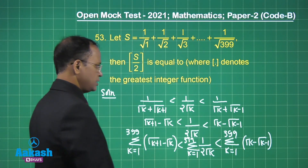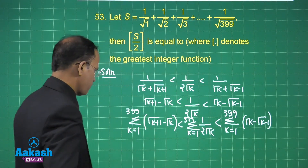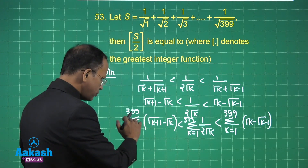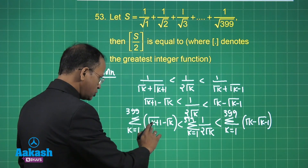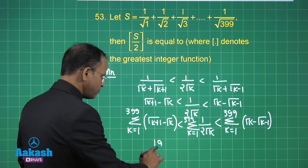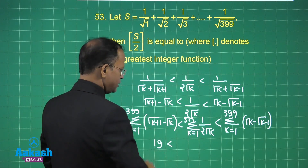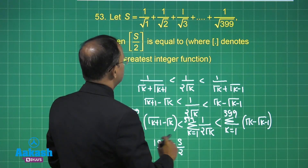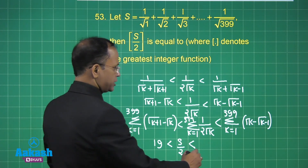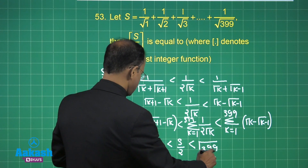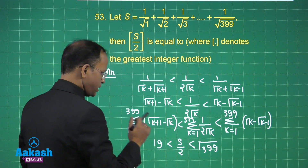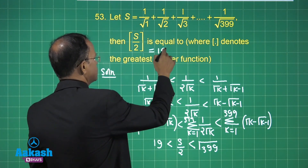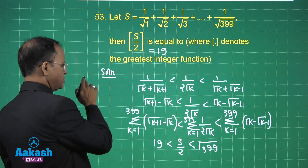The plus and minus terms cancel, and we are left with √400 - 1 = 20 - 1 = 19 on the left side, and √399 on the right side. So we get 19 < S/2 < √399. Taking the greatest integer function of these two values, the final answer is 19.